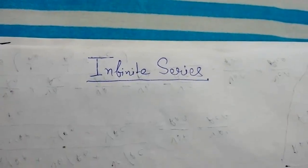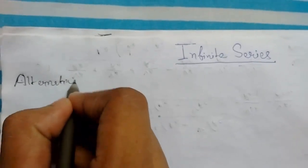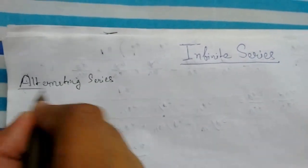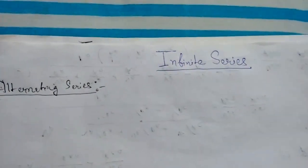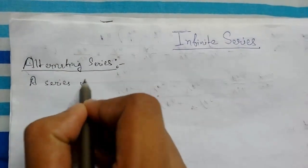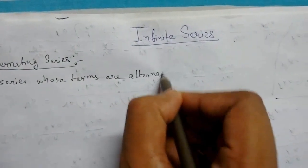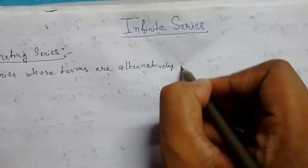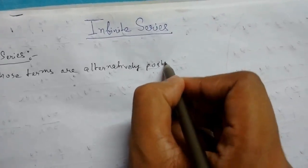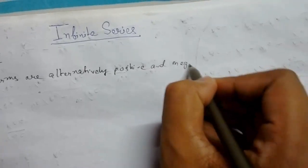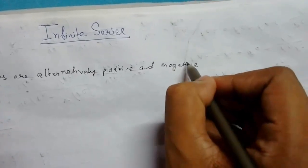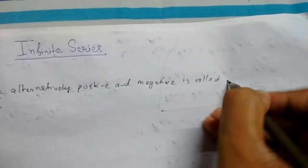Welcome back guys. Today we will be learning about infinite series. Our topic is alternating series. A series whose terms are alternatively positive and negative is called an alternating series.